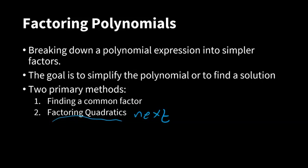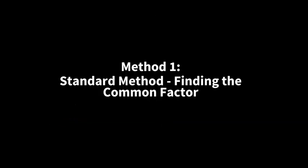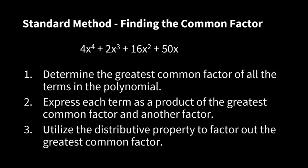This time we're going to focus on finding a common factor — Method 1. This is the standard method of finding a common factor of a polynomial. The order of operations is: first, determine the greatest common factor of all the terms in the polynomial. Second, express each term as a product of the greatest common factor and another factor. Third, utilize the distributive property to factor out the greatest common factor.